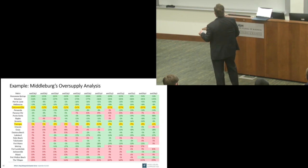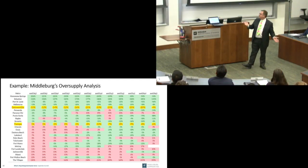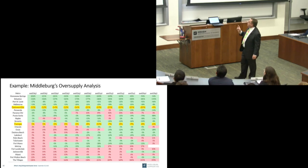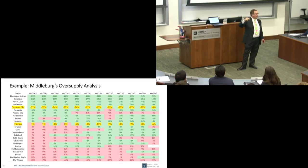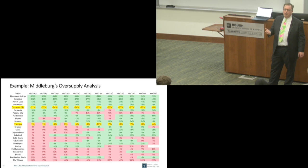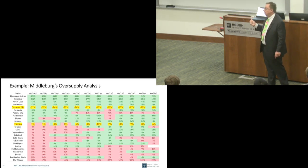The most oversupplied metro area in the entire state of Florida: Homosassa Springs. The least oversupplied: The Villages. There is a pattern here — the oversupply issues are worst in the places that look best. Why are they oversupplied? Because they look good. You can't get away from that. We want to be better than everybody else at evaluating locations, but that's very different from being the only ones who realize a location is good. If it's clearly good, other people will have noticed it too.